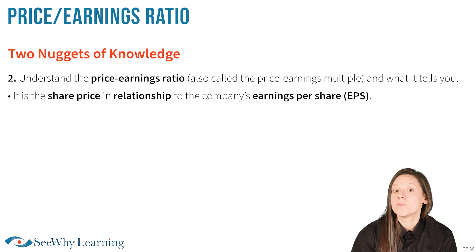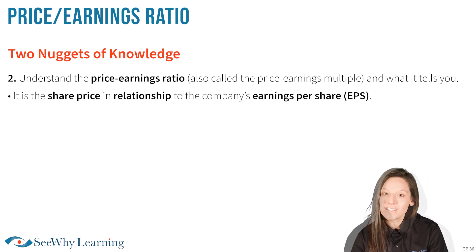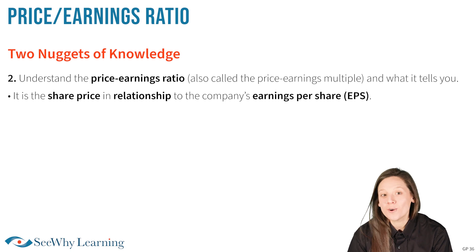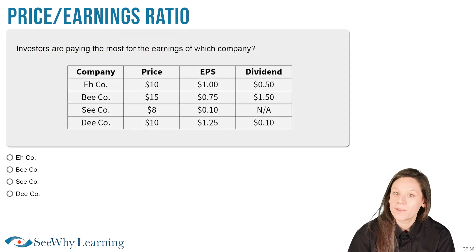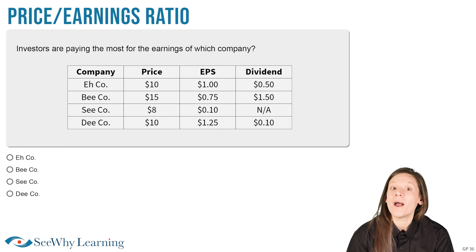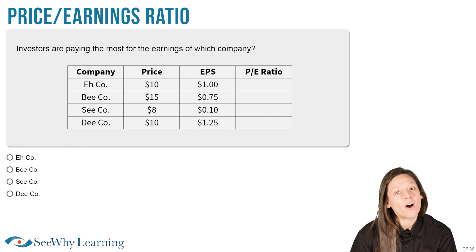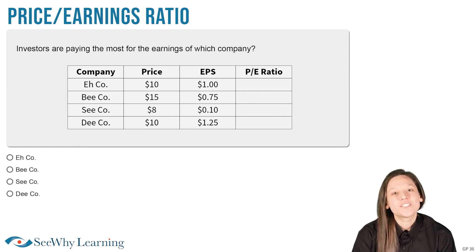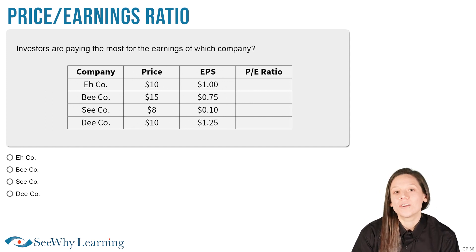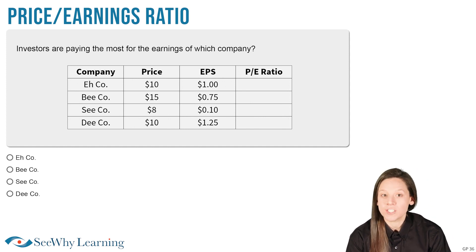The price-earnings ratio is the share price in relationship to the company's earnings per share. With all this in mind, let's circle back to the question I referenced at the top of the video. We're going to get rid of a column and add a new one, because all we need is the price, the earnings per share, and a column to calculate and insert the price-earnings ratio. To determine the price-earnings ratio, we simply divide the share price by its earnings per share.